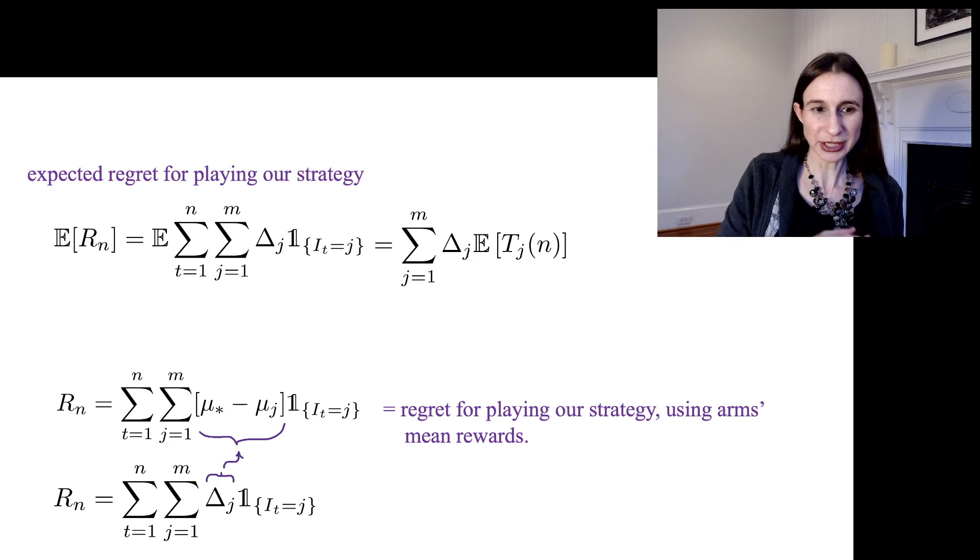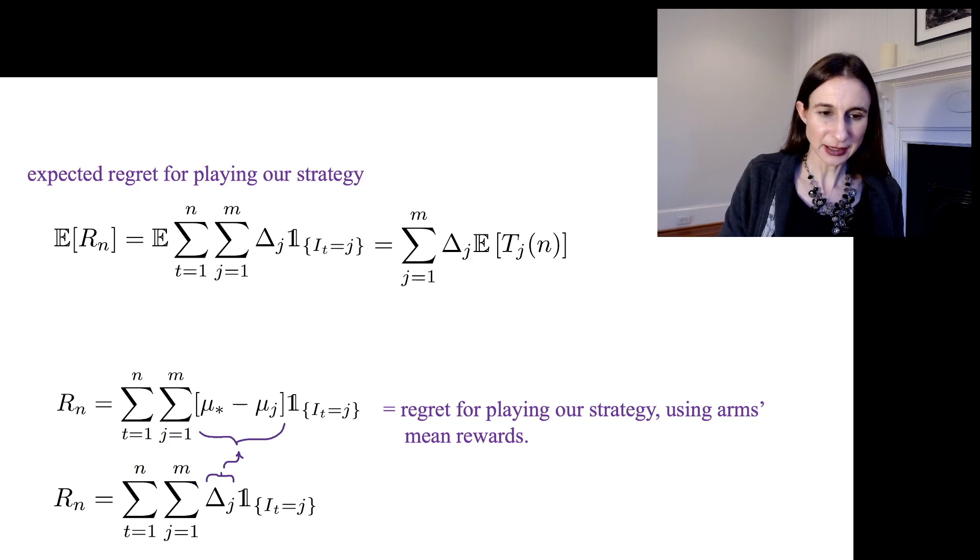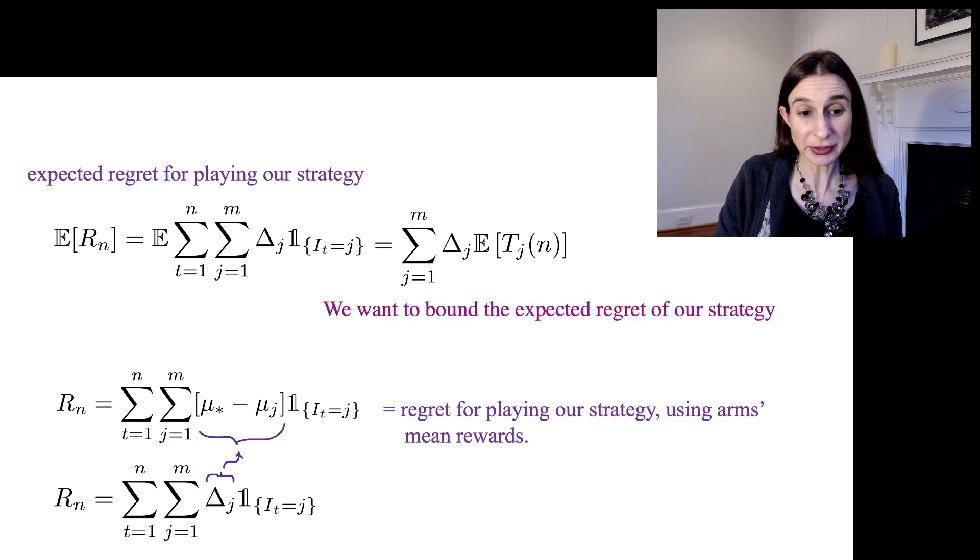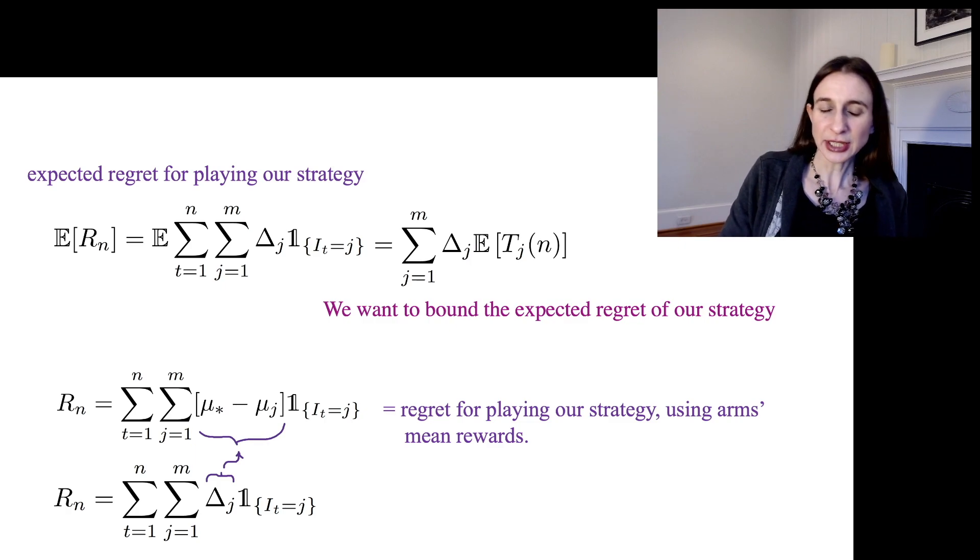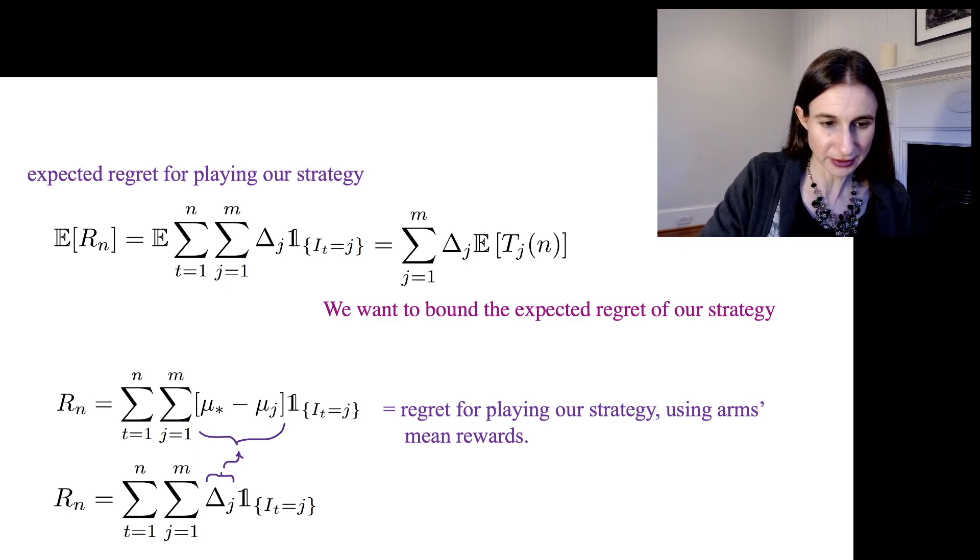I can actually bring the expectation and the sum over time through that sum over j, and it becomes the expectation of the number of times I've pulled arm j up until time n. So we want to bound the expected regret of our strategy, and that's going to involve looking at the amount of times that we actually pull arm j rather than arm star.